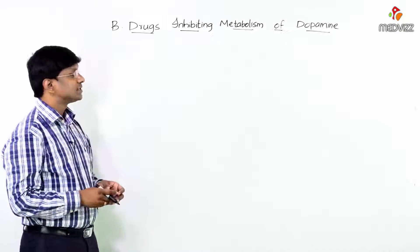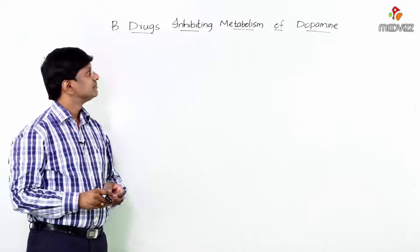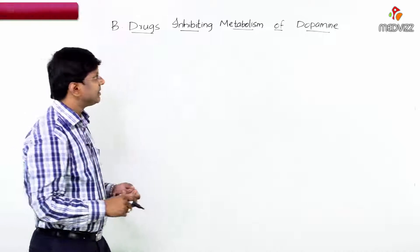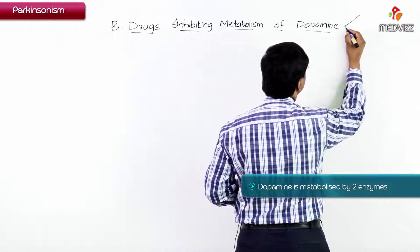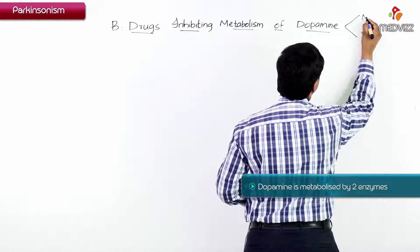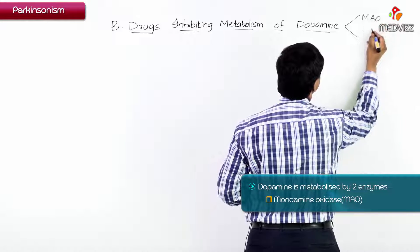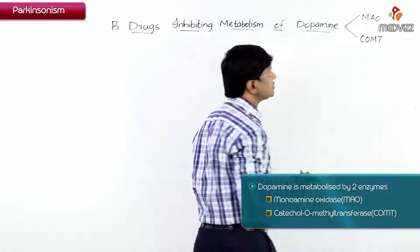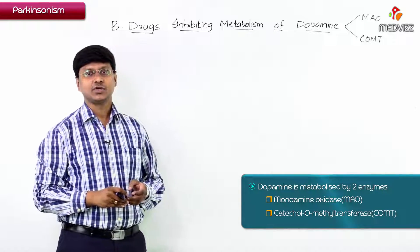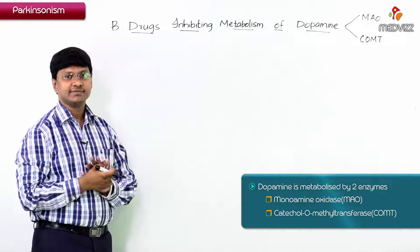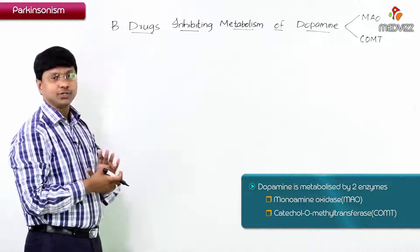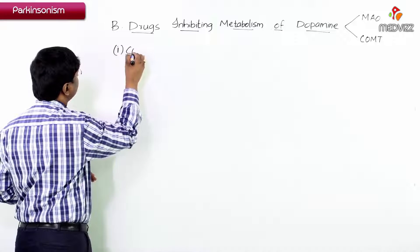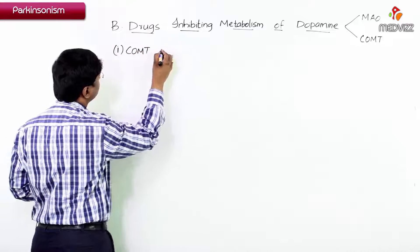Let me discuss the group of drugs that inhibit the metabolism of dopamine. Dopamine is metabolized by two important enzymes: monoamine oxidase (MAO) and catechol-O-methyltransferase (COMT). These two enzymes are responsible for metabolizing dopamine. First, let me discuss the COMT inhibitors.